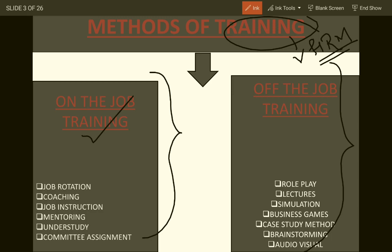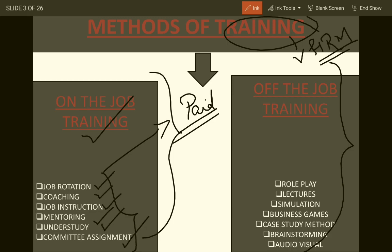When training is given to employees while they are actually working - learning by doing - this is termed as on-the-job training, and they are also paid during this time. Different methods of on-the-job training include job rotation, coaching, job instruction, mentoring, understudy, and committee assignment. Today we're going to focus majorly on off-the-job training.